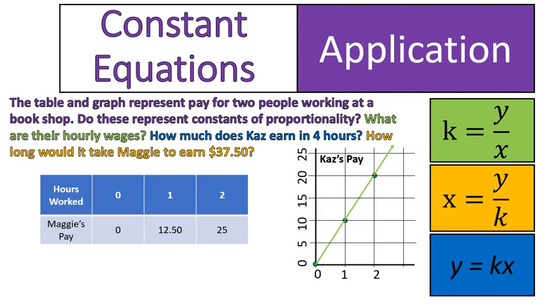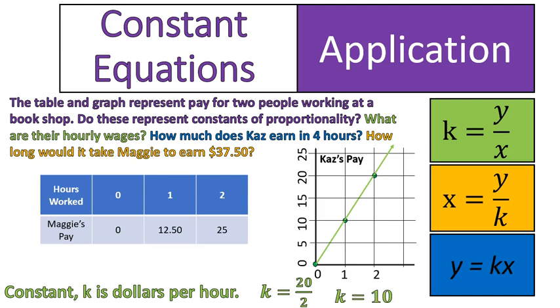Question number two, what are their hourly wages? We're going to use the green equation for that to find the constant. The constant is their pay per hour or dollars per hour. In the case of Kaz's graph here, you see that he works for two hours and gets paid $20. That is a constant of $10 per hour. We could also look at the graph in the position of one hour and look that it does make $10 for every one hour.